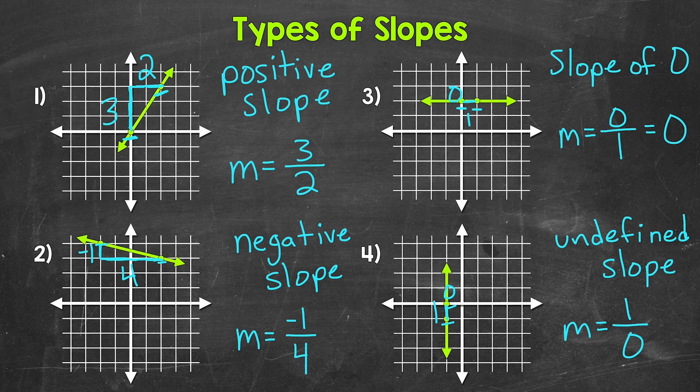The slope of any vertical line is undefined. So our last type of slope: undefined slope. There you have it — there are the four types of slope. Time for you to try some practice problems on your own.